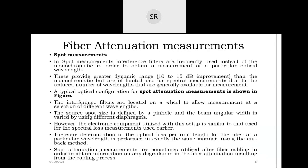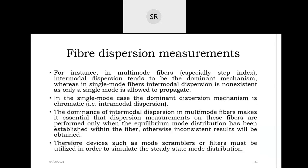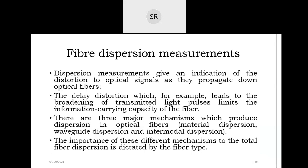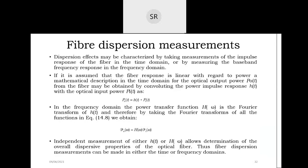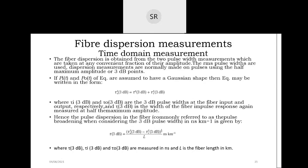We have seen attenuation measurement, loss, and related topics. Next is dispersion measurement. Light propagating through the fiber carries information in the form of pulses, but pulse broadening takes place at the end — that broadening is nothing but dispersion.